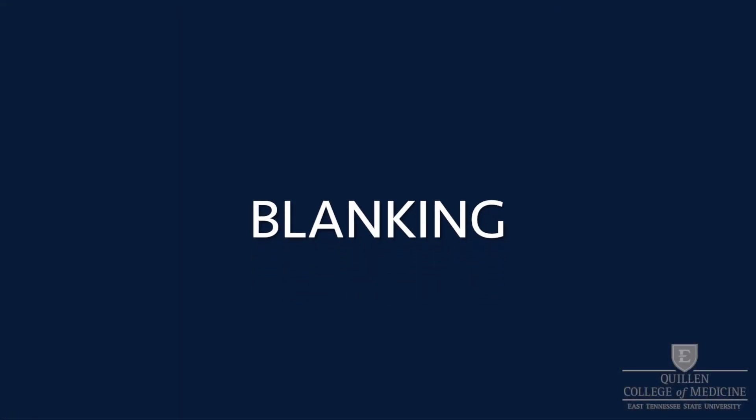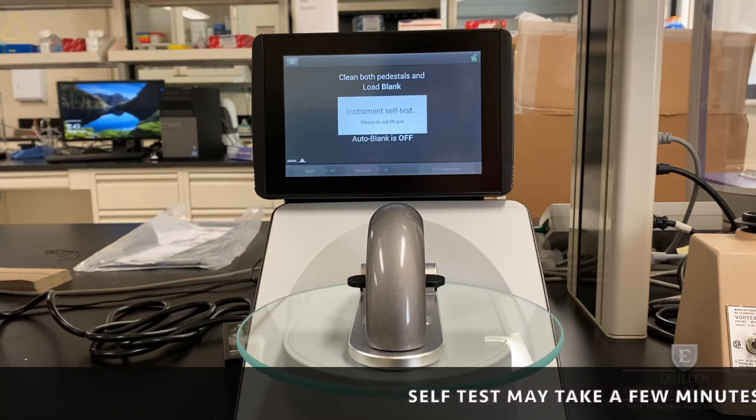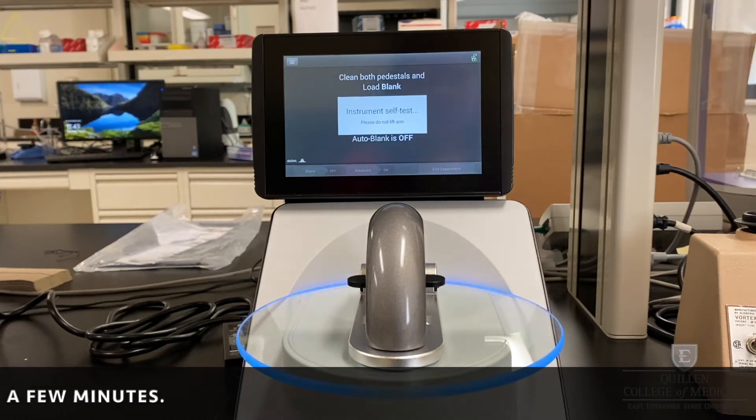We first need to create a blank using our sample diluent. Begin by selecting your sample type. The NanoDrop will perform an instrument self-test.